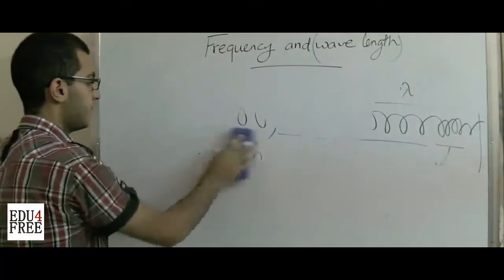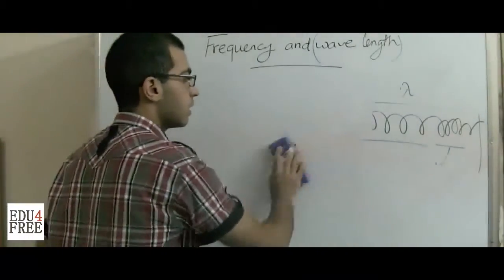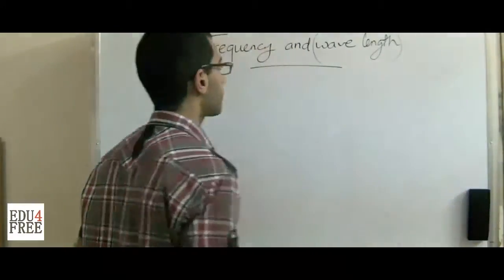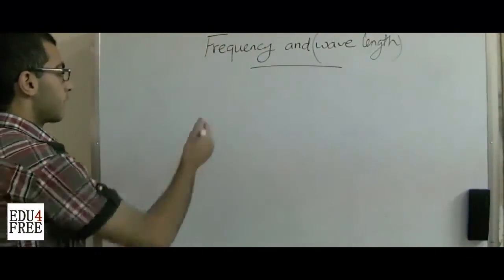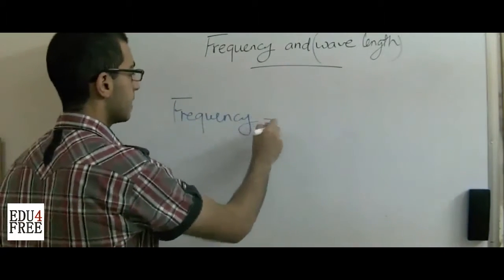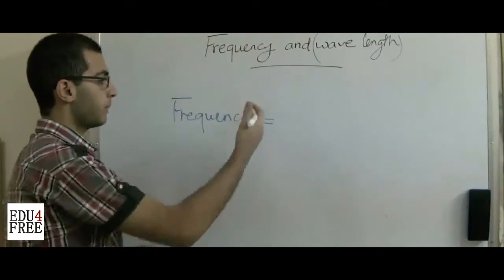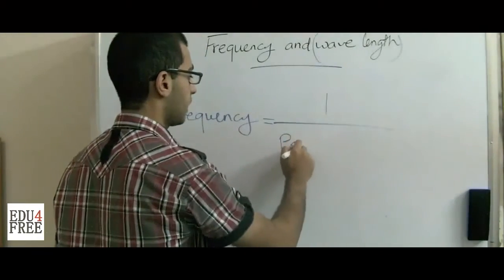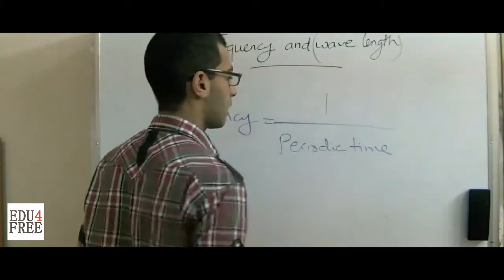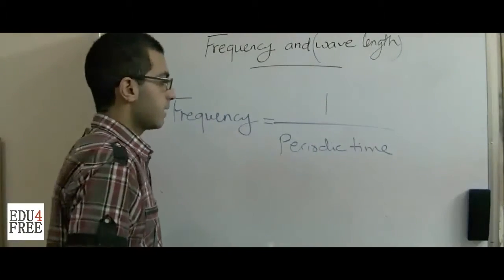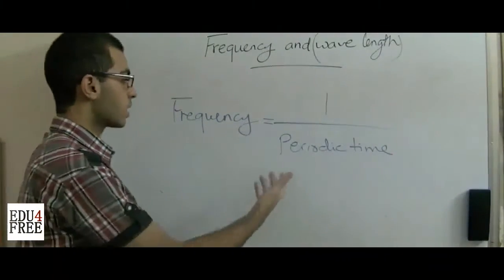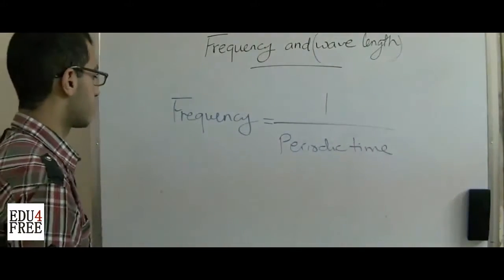Then we have the frequency. The frequency is the reciprocal or the multiplicative inverse of the periodic time. We have just mentioned that the periodic time is the time needed by the wave in order to make one complete oscillation.